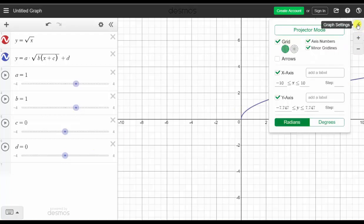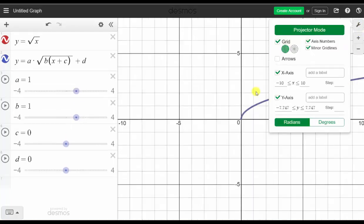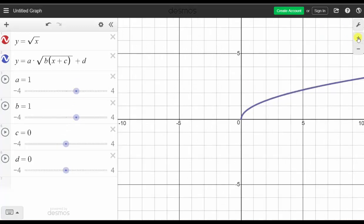We can also click on the wrench and click projector mode to make the graphs thicker, and then we click anywhere on the graph to close that menu.